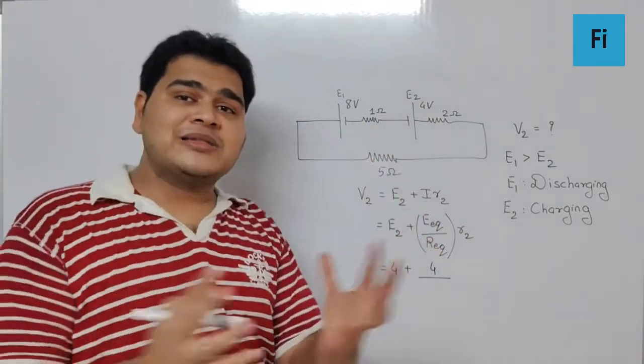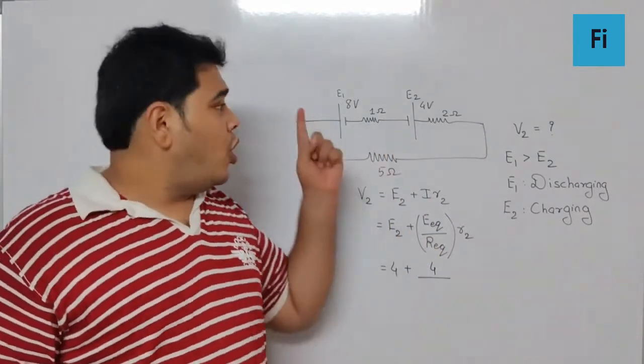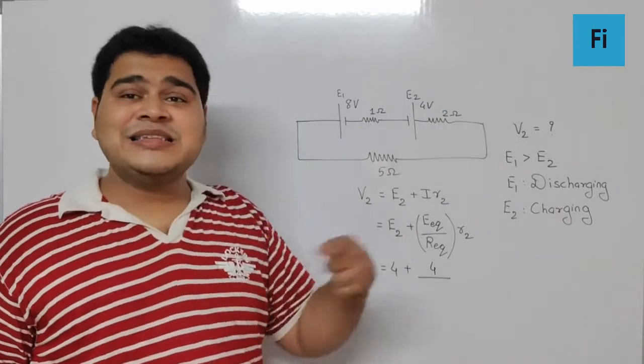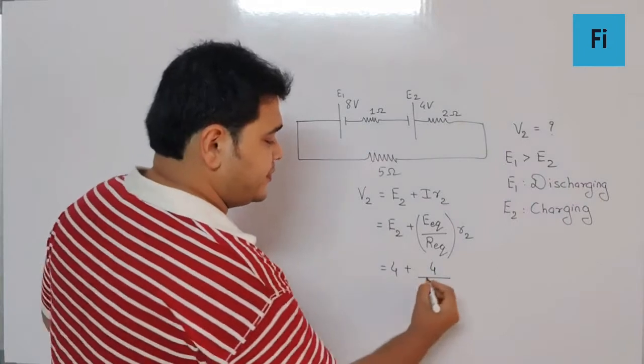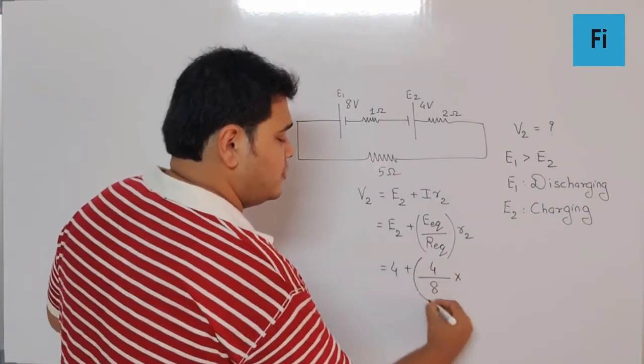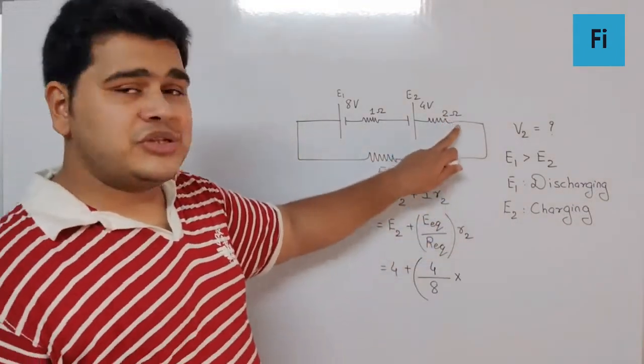R equivalent is the total resistance of the circuit, and here all the three resistances are in series, so we have 1 plus 2 plus 5, and that is 8 ohm, into definitely R2, the value is 2.